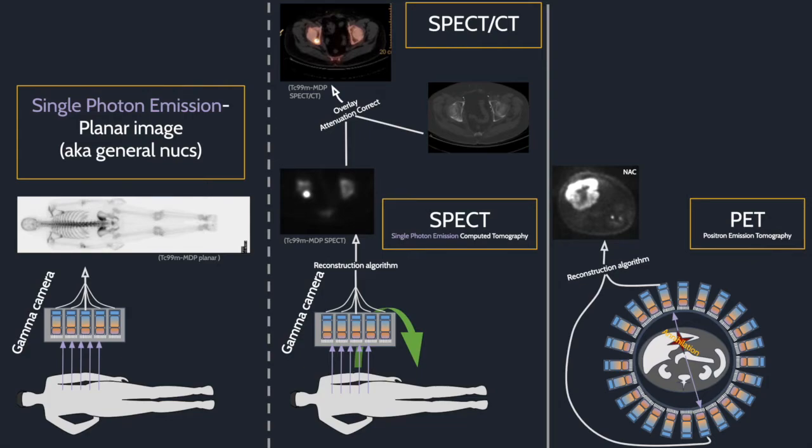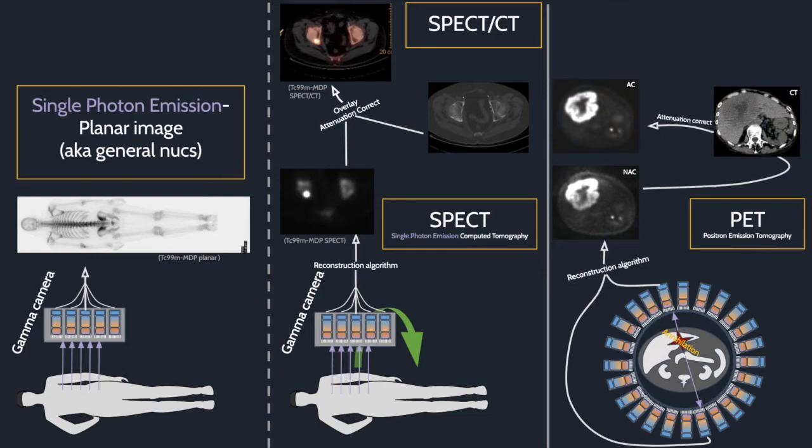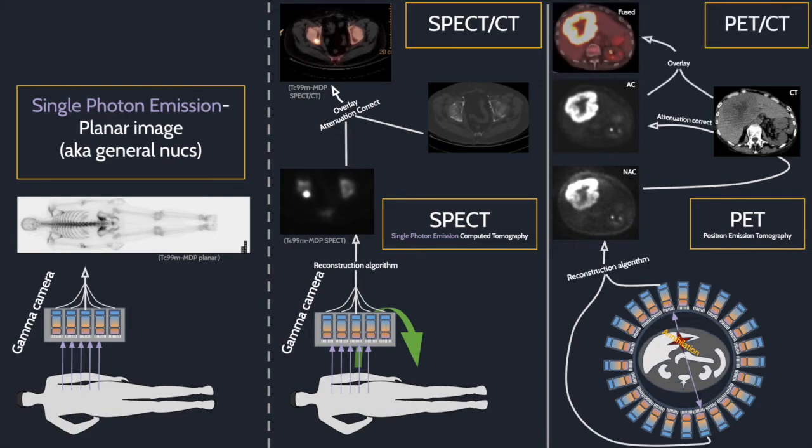Initially, we get an NAC image or a non-attenuation corrected image. Notice that the skin surface is bright and the center of the image is dark. That is because photons that originate deeper in the body will be absorbed and not get to the detector or be attenuated more than photons that originate superficially. We combine this non-attenuation corrected data with a conventional anatomic CT to correct for this area, and we get an attenuation corrected PET image.